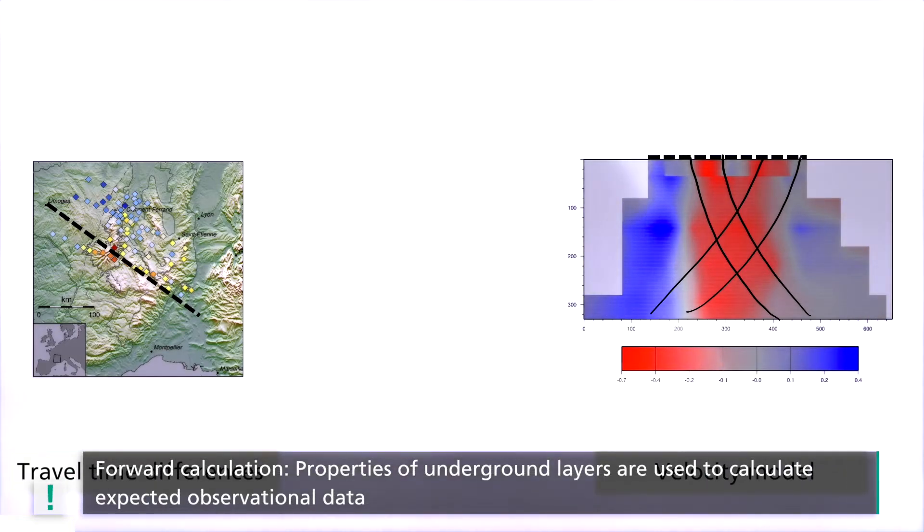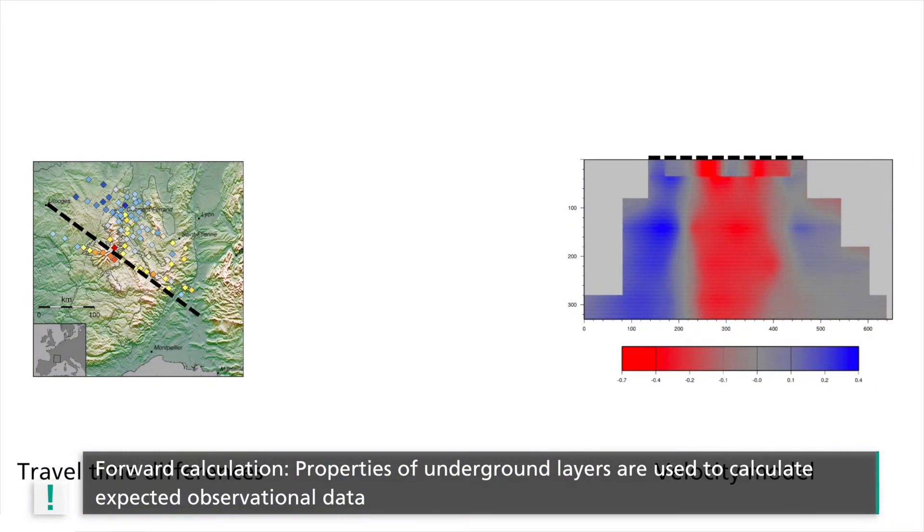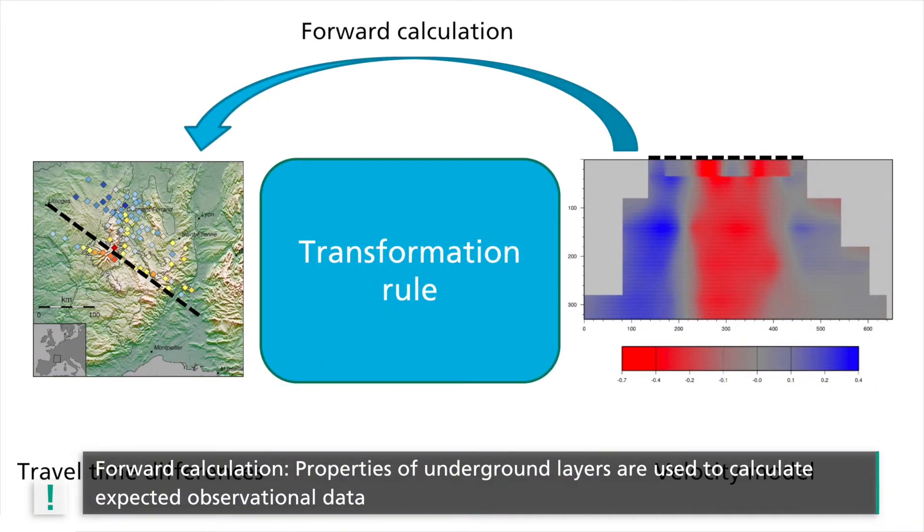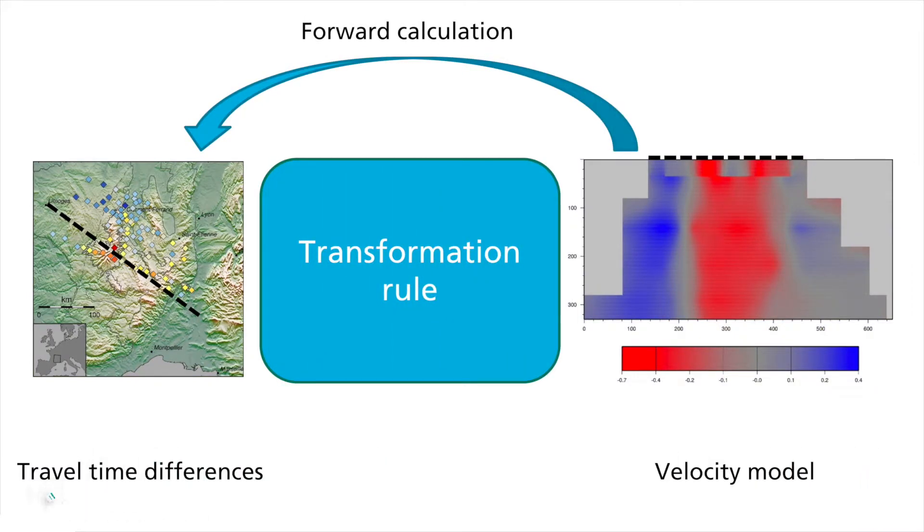Hence, this simple transformation allows us to calculate expected travel times from underground properties we know. We call this a forward calculation. Other examples of such forward calculations are underground density variations which lead to changes in gravity, or variations in the electrical resistance underground which lead to changes in an artificially created voltage field.